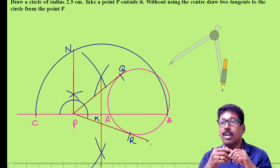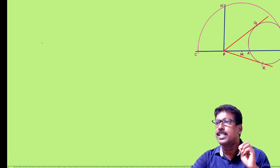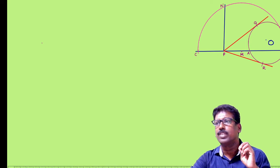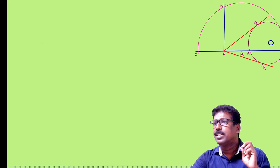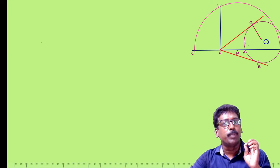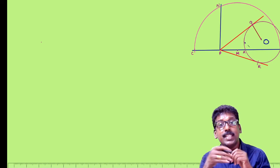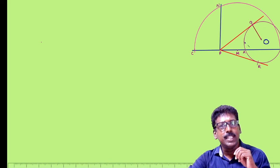Now let us see how PQ becomes a tangent. Let O be the center of the circle. If OQ is perpendicular to PQ, you can say PQ is the tangent, because a tangent is perpendicular to its radius. How can you prove angle OQP is a right angle?